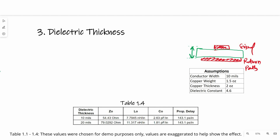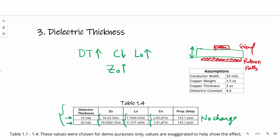Dielectric thickness is the thickness of insulating material between the signal and its return path. If we increase the dielectric thickness, capacitance per unit length will decrease and inductance per unit length will increase, and overall characteristic impedance will increase. As you can see on table 1.4, I increased dielectric thickness from 10 mil to 20 mil, and its characteristic impedance increased from 54 to 79. Inductance per unit length increased, capacitance per unit length decreased, but there will be no change in propagation delay.